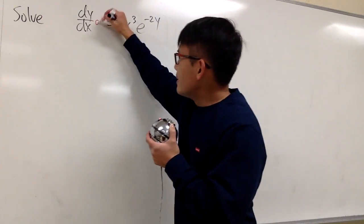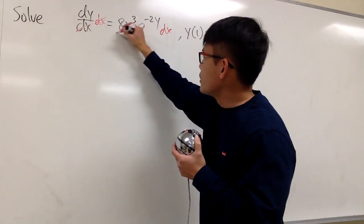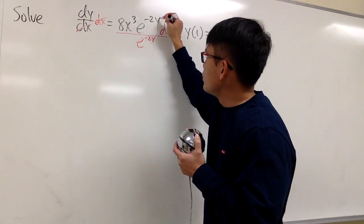All right, let's go ahead and multiply dx on both sides. And you see, here is the y part, right? So let's go ahead and divide both sides by e to the negative 2y.